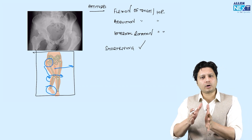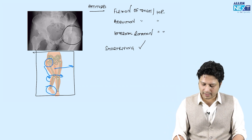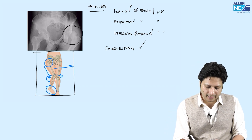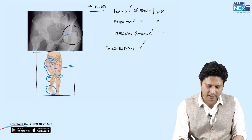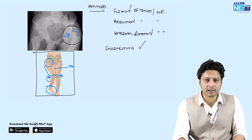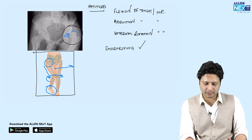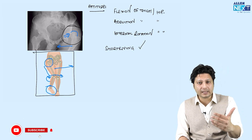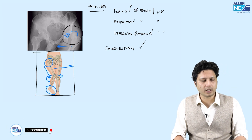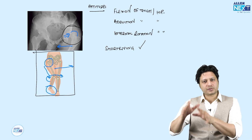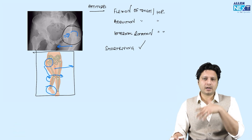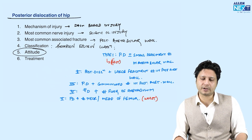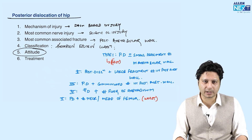On X-ray, the head of the femur is truly out of the acetabular cavity. Looking at the adduction deformity on X-ray, you can identify it as posterior dislocation of the hip joint. Although X-rays are just suggestive, the diagnostic is the clinical presentation — the attitude in which the patient comes to you.